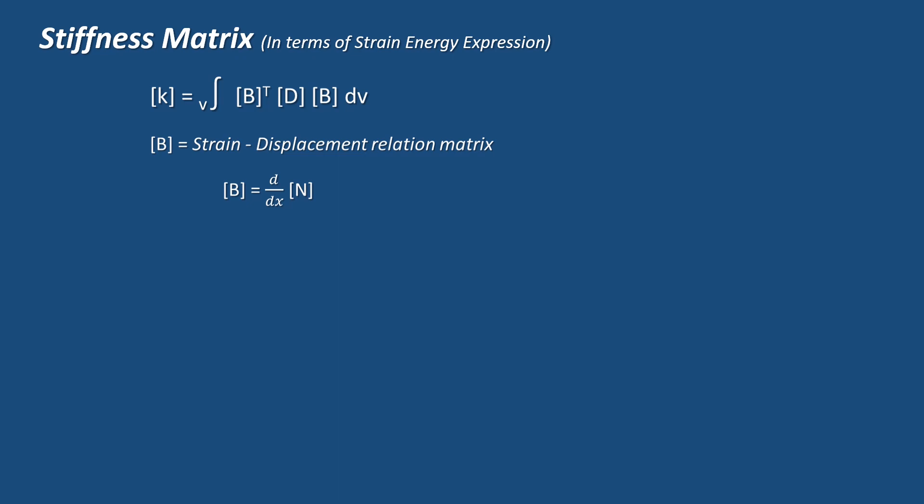We know that strain is change in length or displacement by original length. We can represent the displacement in terms of shape function capital N. So we can write strain displacement relation matrix in terms of shape function as matrix B equal to d by dx of N.